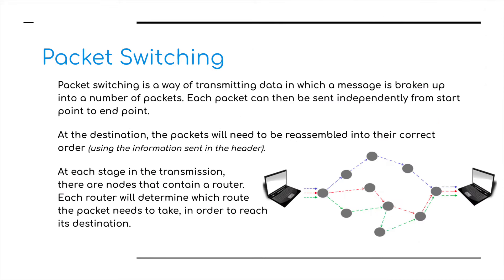Packet switching is a type of data transmission in which a message is broken up into a number of packets. Each packet can be sent independently from start point to end point over the network. At the destination, the packets will need to be reassembled into their correct order, using the information in the header. The IP addresses in the header enable us to know exactly where the information is being sent. At each stage in the transmission there are nodes that contain a router, and each router will determine which route the packets need to take to reach the final destination.